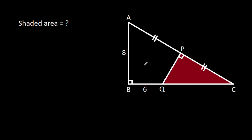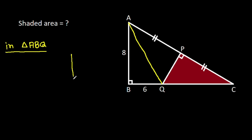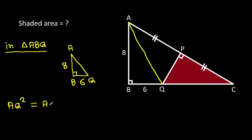So, if we join AQ, then in triangle ABQ, AB is 8, BQ is 6, and this angle is 90 degrees. So by the Pythagorean theorem, AQ squared will be AB squared plus BQ squared.